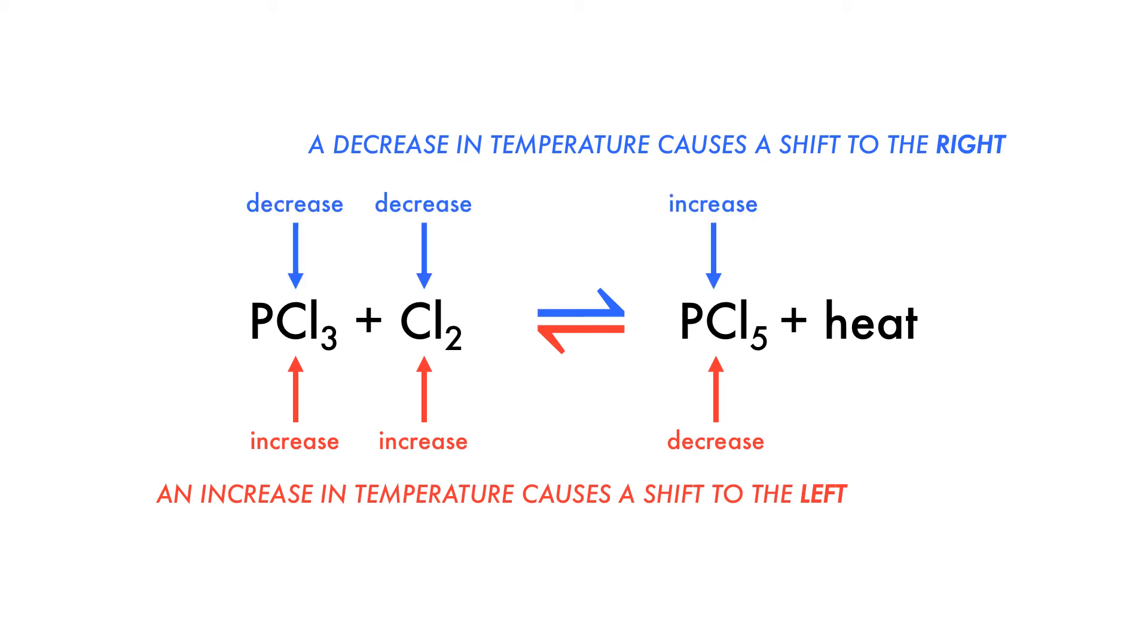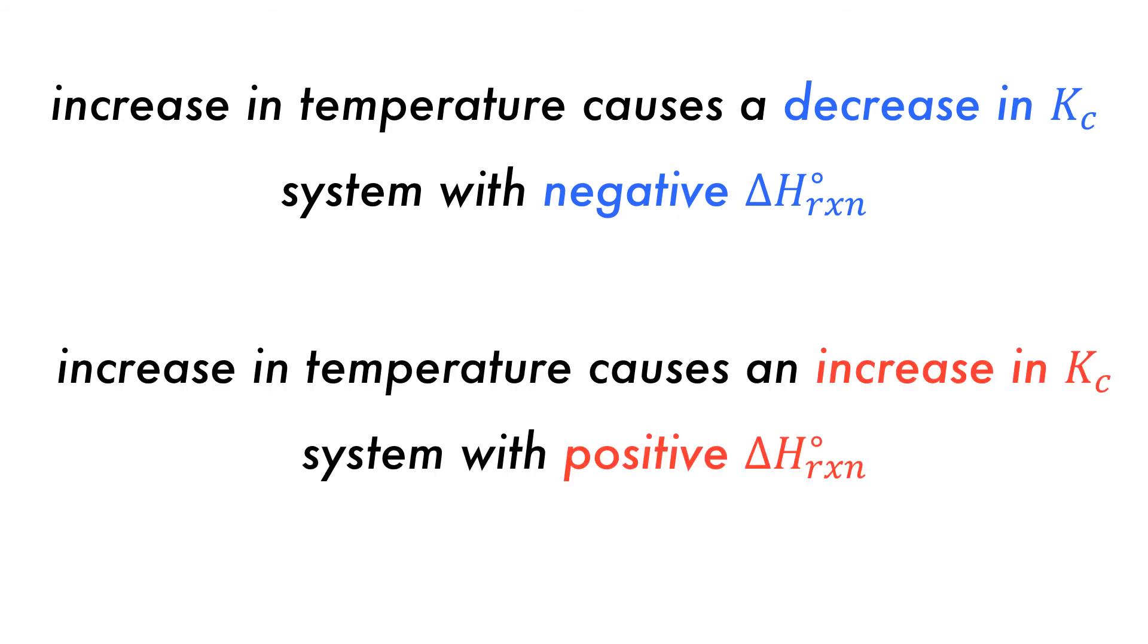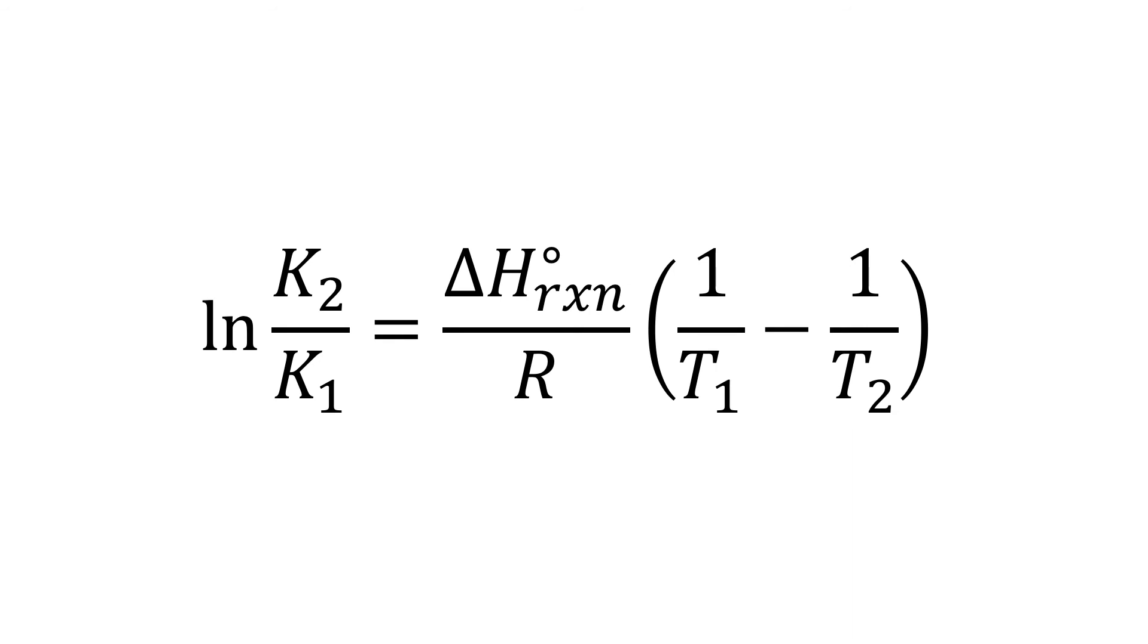Temperature changes also affect Kc, so an increase in temperature will decrease Kc for systems with a negative heat of reaction. Conversely, if the heat of reaction is positive, then Kc will increase. The van't Hoff equation provides a quantitative description of the effect of temperature on the equilibrium constant. As R is the universal gas constant, if K1 and the heat of reaction at a given temperature are known, this equation allows the calculation of the equilibrium constant at a different temperature.